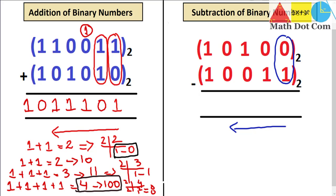We can't subtract 1 from 0, so we need to borrow — just like in decimal subtraction. Looking to the right column, we have 0 there, so we move to the next left column, which also has 0. We move further left and find a 1. We borrow that 1, and the key point here is that in binary numbers, a borrow gives you 2, whereas in decimal it gives you 10. So we get 2, then borrow again to the next column, making it 2 as well.